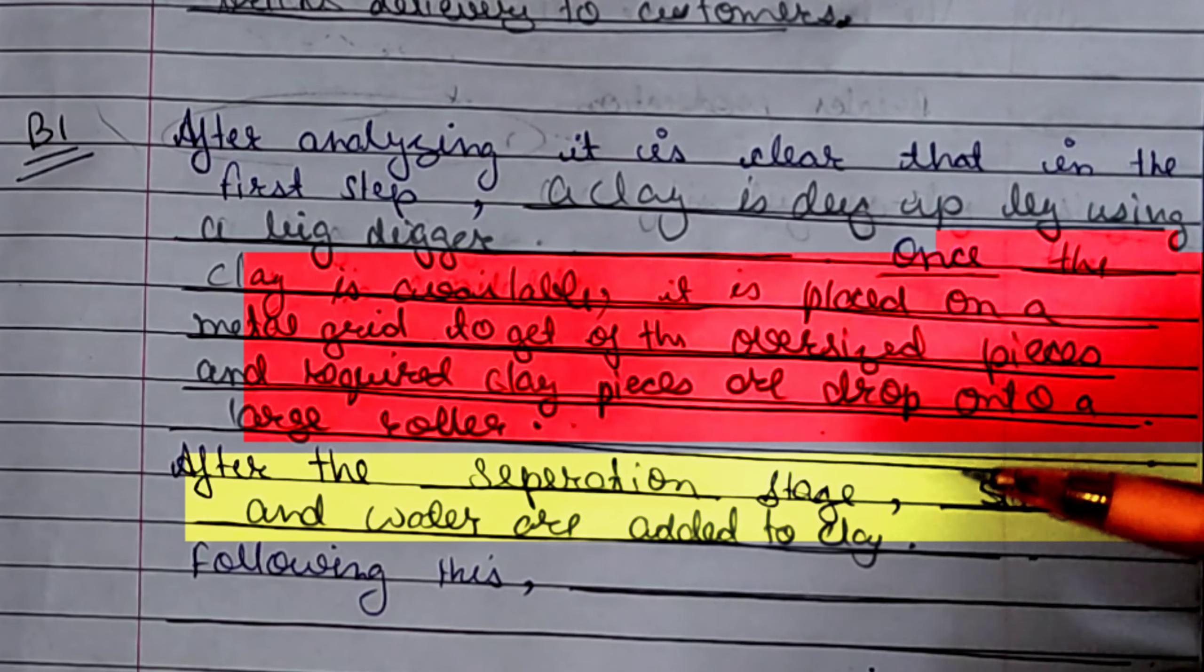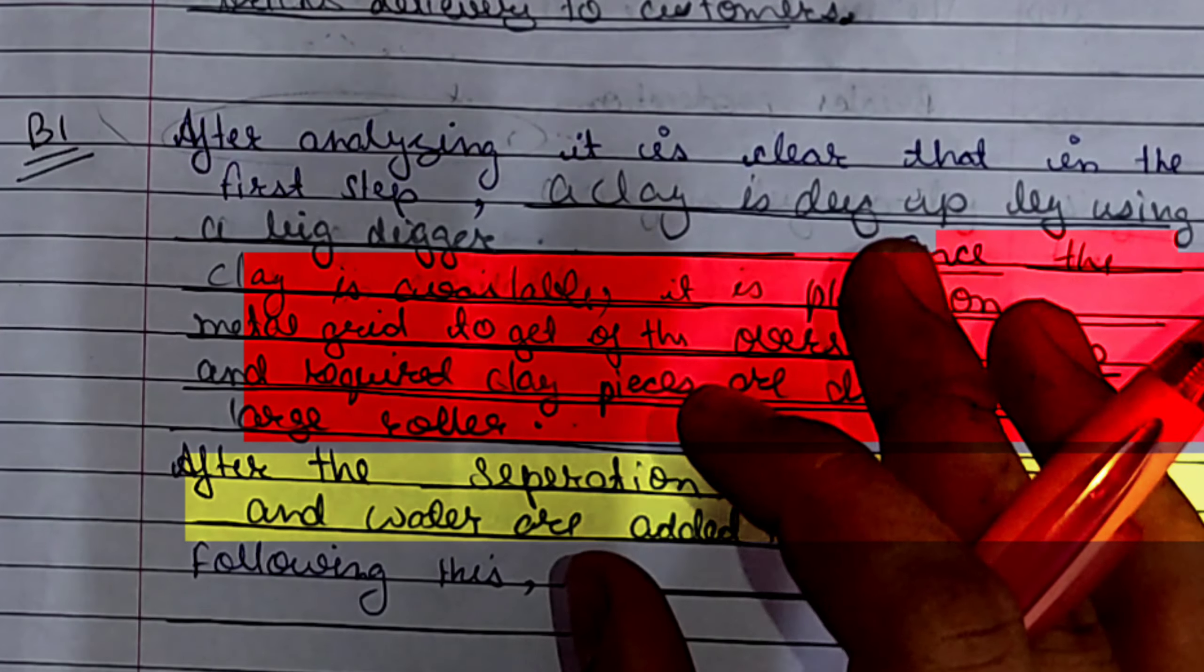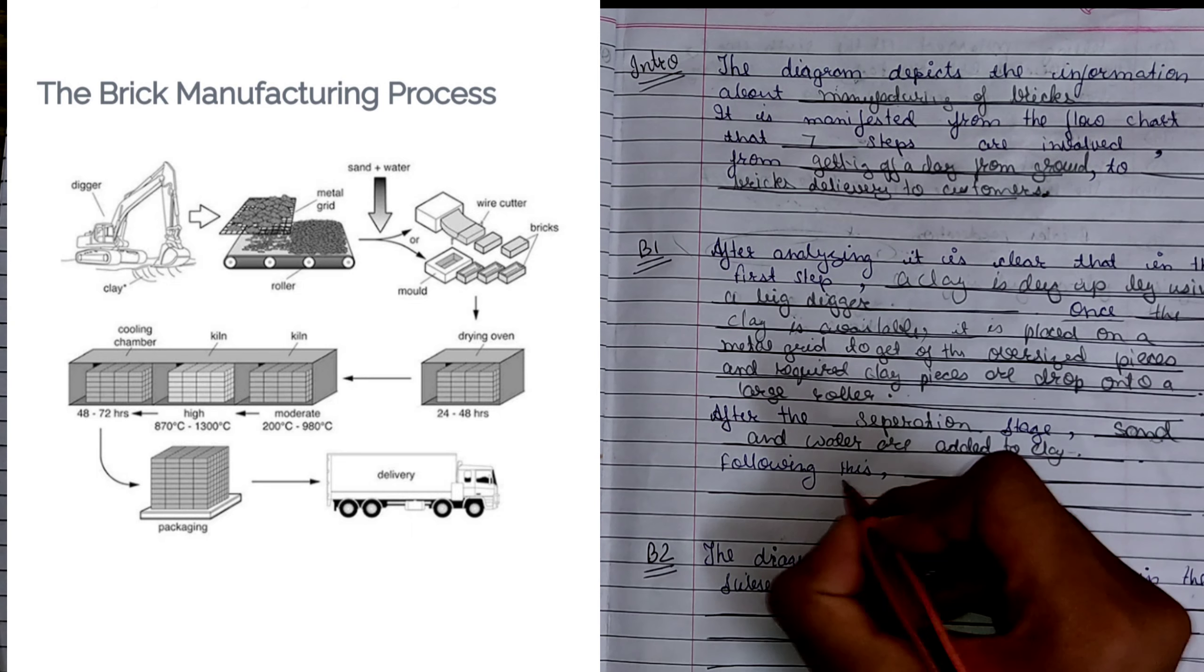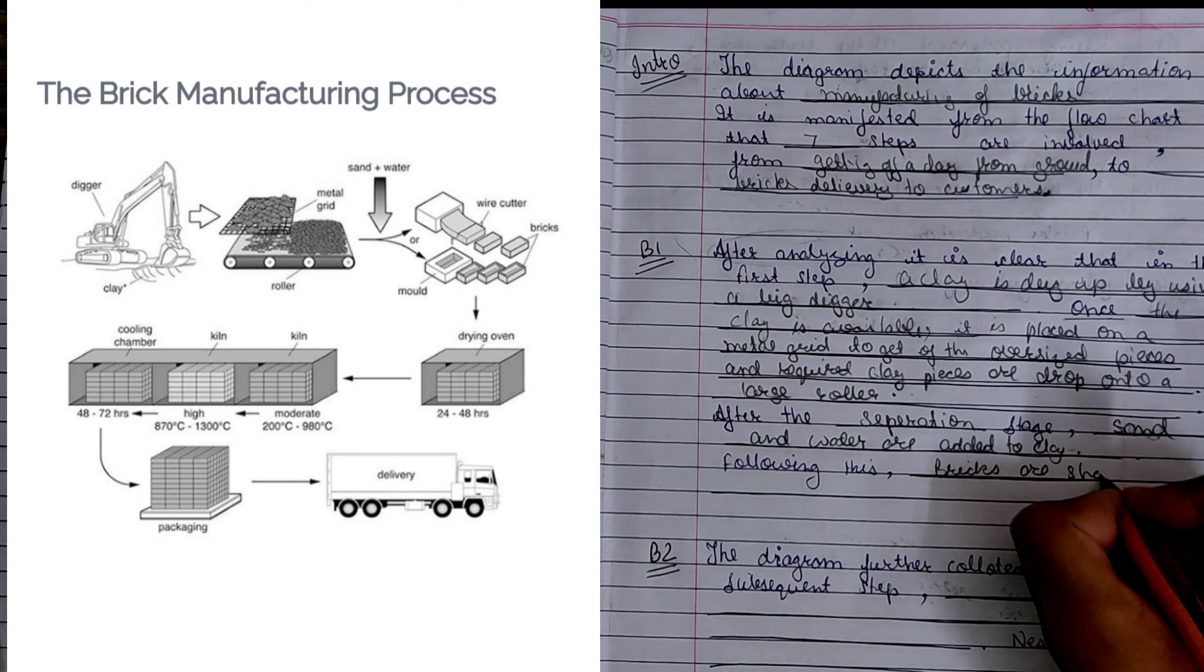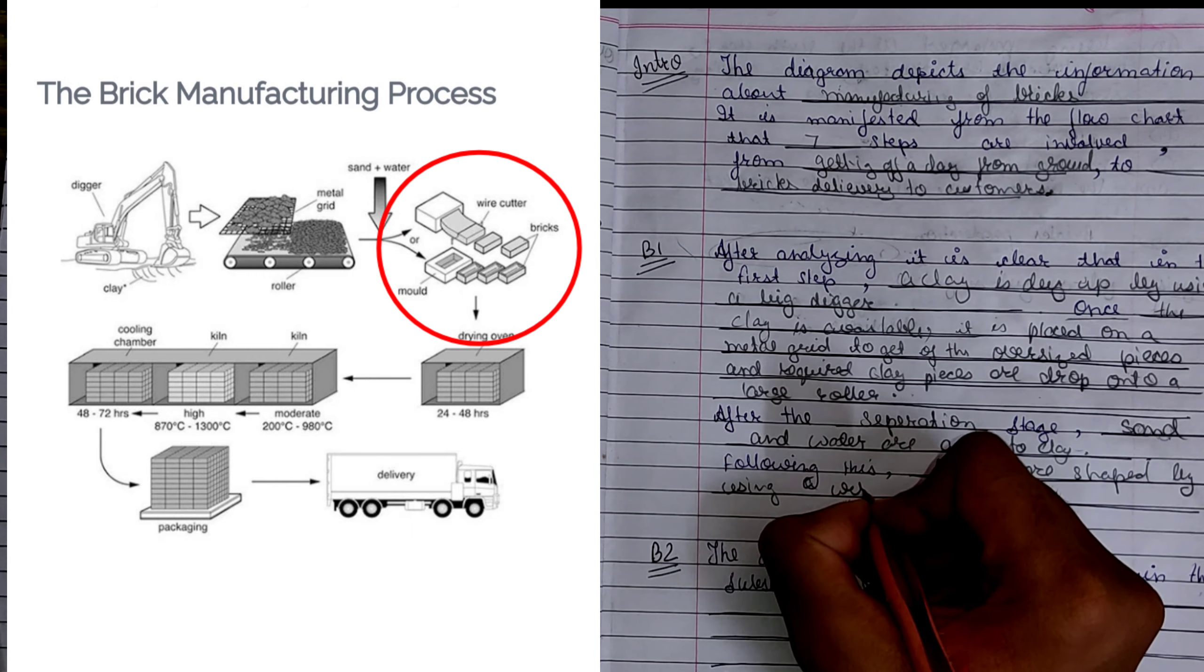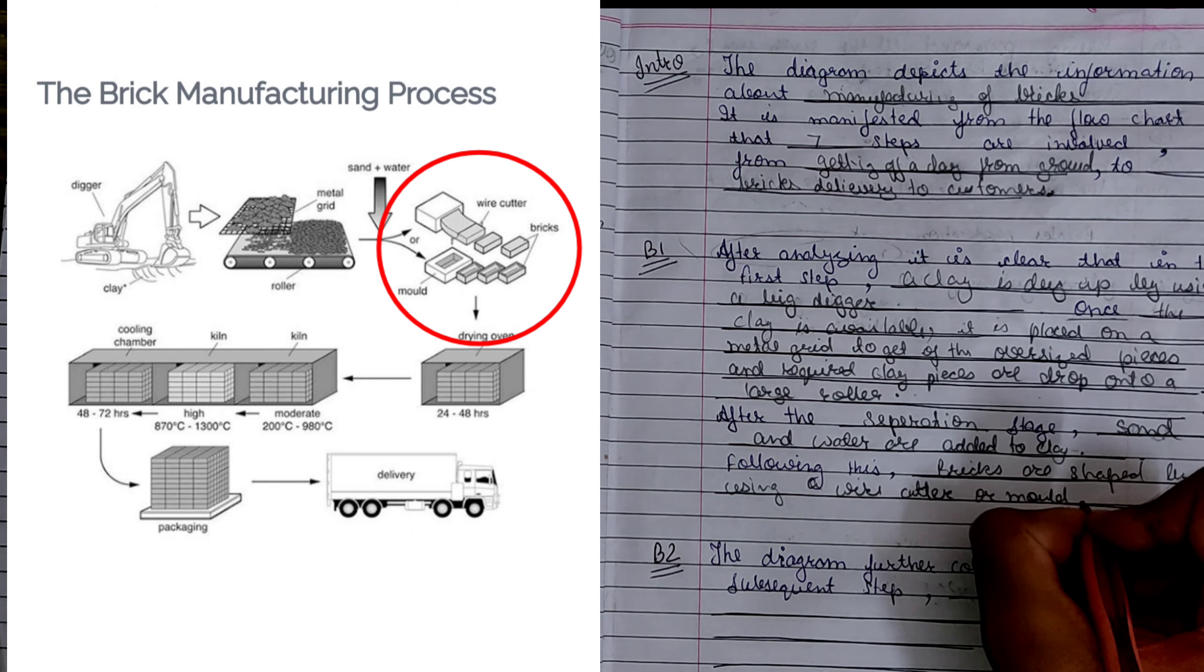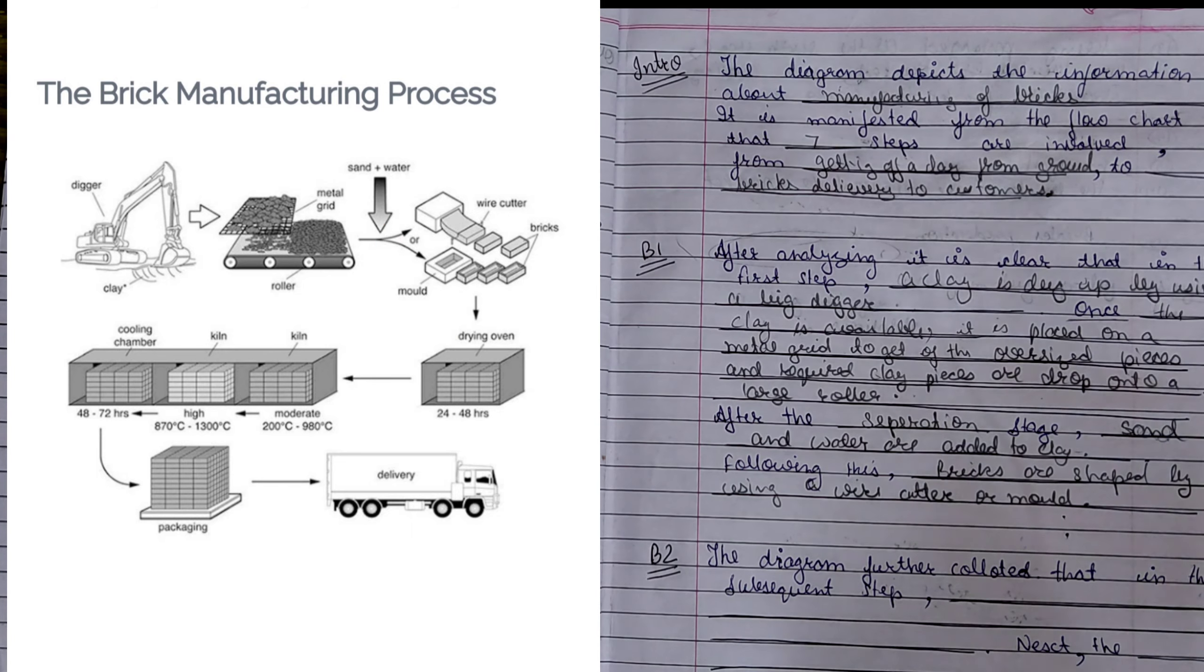Now in both these sentences, first we have highlighted the previous stage and then describe upcoming stage. This type of methodical sentence will help you in getting 3 out of 3. And then after that, following this, bricks are shaped by using a wire cutter or mold. Now one body paragraph is over.